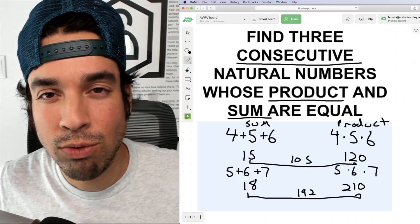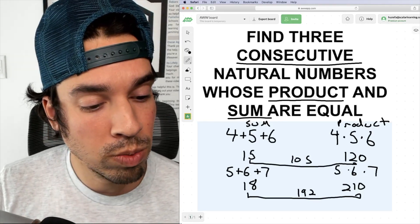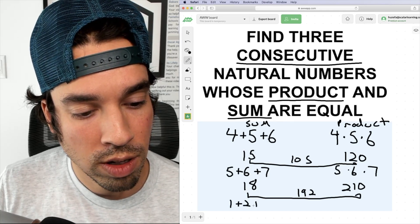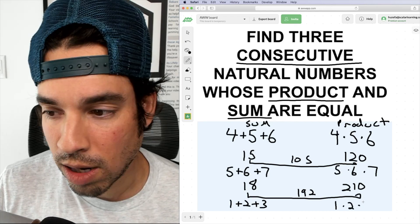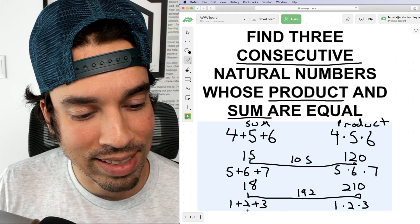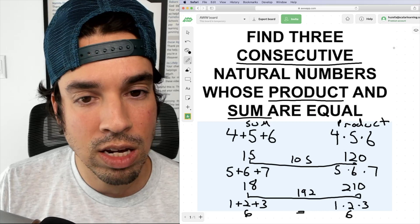So my normal inclination, therefore, is then we gotta choose smaller numbers. And what's the smallest we can go? The smallest we can go is one, two, and three versus one times two times three. And what is this? Well, of course, one plus two plus three is six. And the other side, one times two times three is six. And those are indeed equal.